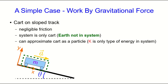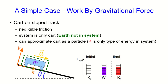The kinetic energy is the only type of energy in the system. Our energy bar chart shows that initially the cart is at rest so K_i is zero, and there's external work done resulting in some non-zero kinetic energy later. The work by definition is just the change in the energy of the system, which is just the change in kinetic energy.